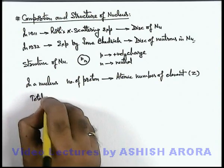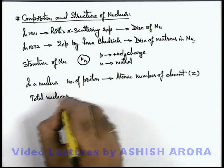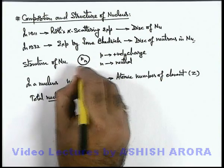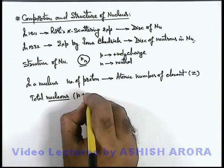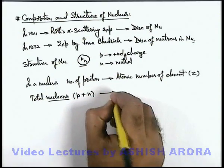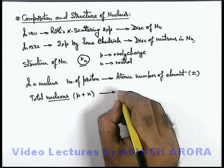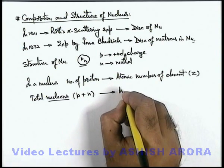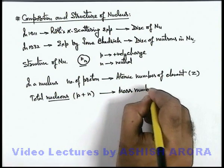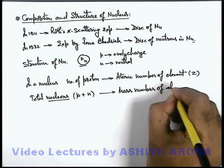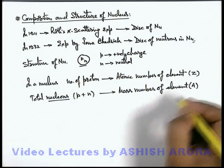The total nucleons — nucleons being the constituents of the nucleus, that is protons plus neutrons — are given a specific number called the mass number of the element, denoted by the letter A.